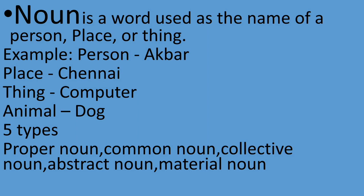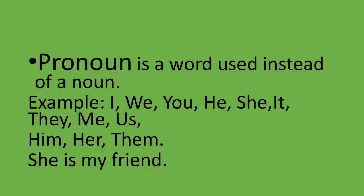And the next one is material noun. Material noun is the name of a raw material of a product. Examples of material nouns include gold and silver. And the next one is pronoun. Pronoun is a word used instead of a noun.